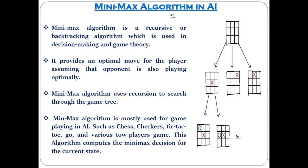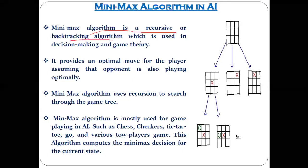The min-max algorithm is a kind of backtracking algorithm used in decision making. When you are playing a game you need to make decisions that might be right or wrong. It uses recursion to perform searching through the game tree. We may also take help of an informed or uninformed search algorithm alongside it.